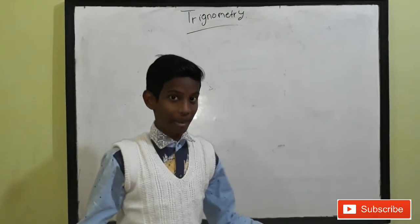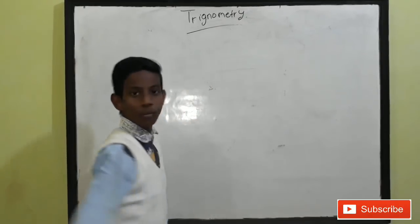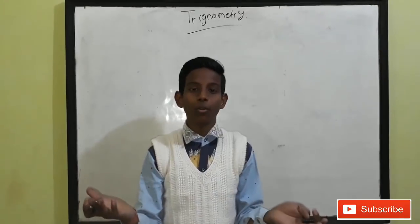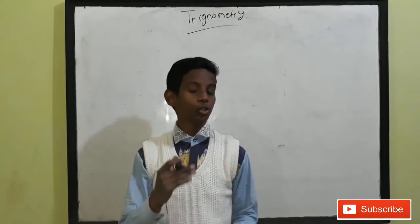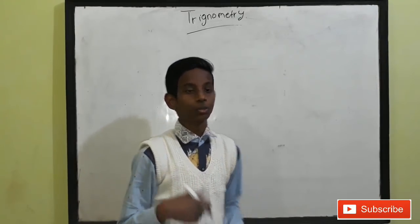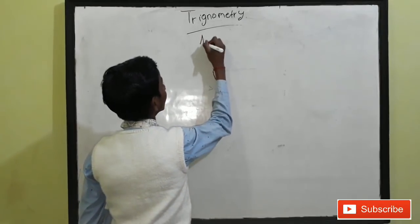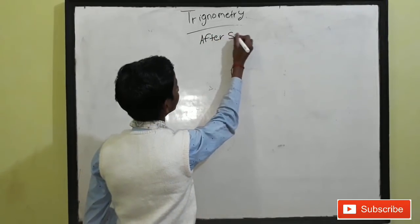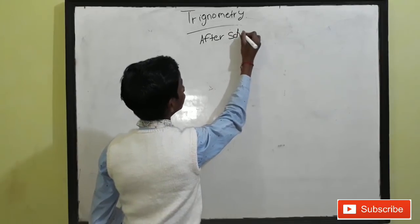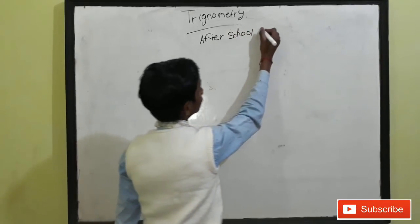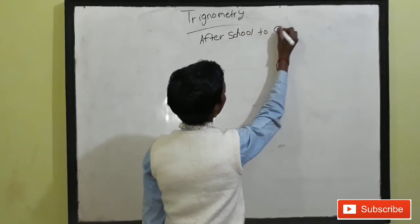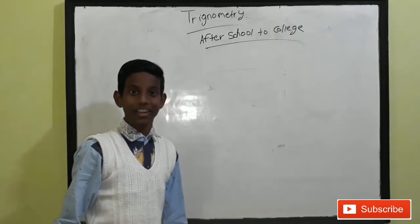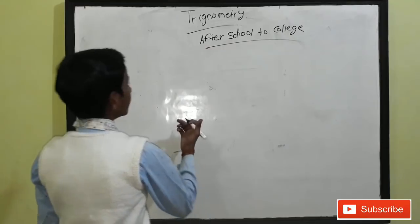Trigonometry. So there is a formula. First, I want to ask you: after school, where do we have to go? When we are completing our 12th, we are going to college. So it's a formula — after school to college.